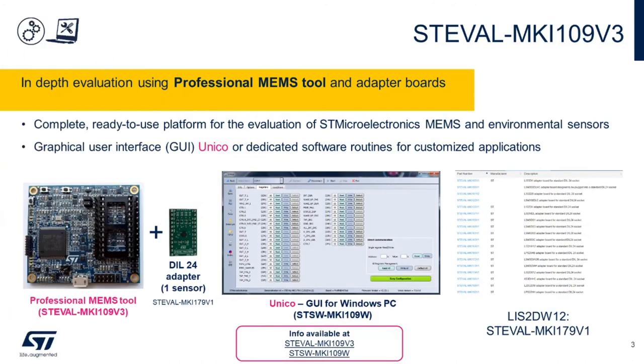One of the most powerful evaluation tools that we have is the ST-Eval MKI109v3, also called the Professional MEMS tool. The Profi MEMS allows you to connect through a DL24 pin socket a wide range of adapter boards featuring all the available ST sensors, and in this case I have listed here the LIS2DW12 adapter board, the ST-Eval MKI179v1.